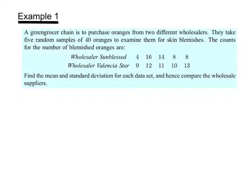Let's take a look at our first example problem. We have a grocery chain that purchases oranges from two different wholesalers. They take five random samples of 40 oranges to examine them for skin blemishes. And here's the data below. So for example, in the first random sample for wholesaler Sunblessed, there were four blemished oranges.